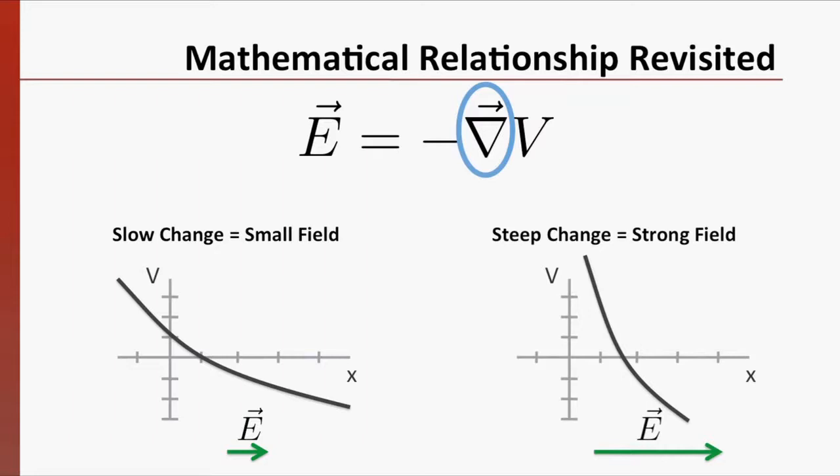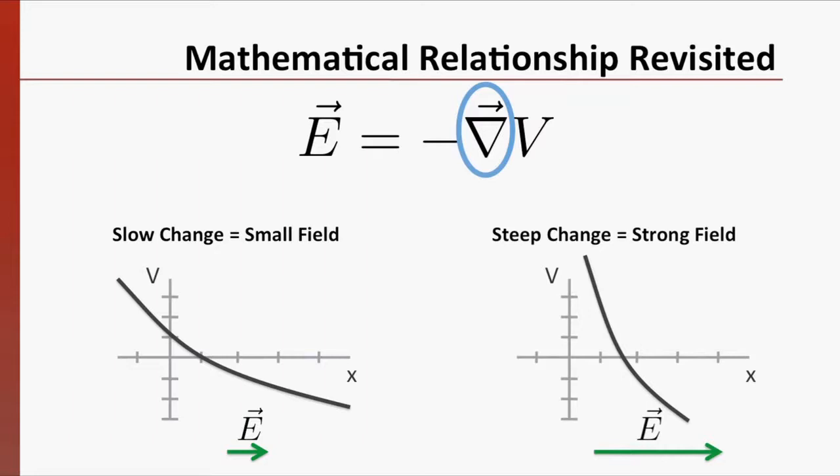In fact, when numerical values are given for the breakdown potential, they are often given in volts per meter, which is actually a measurement of the electric field. The term breakdown potential is a little misleading, but it's still the standard terminology.